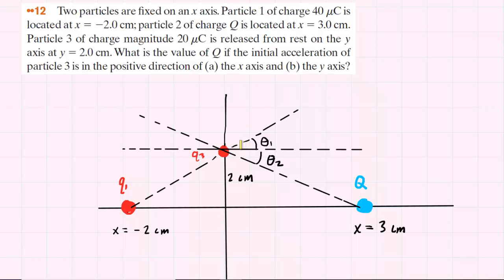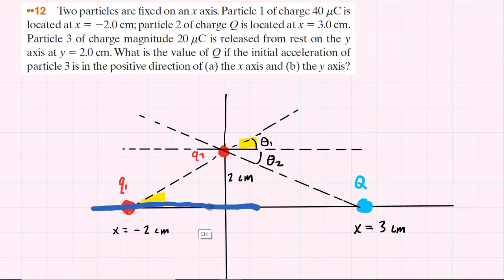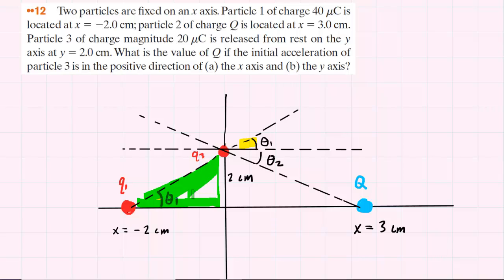Now you may notice that theta 1 is going to be equal to this angle down here. Basically the reason for that is because you have two lines running parallel to one another, and then you have a third line inserted here cutting through them. In that situation, those yellow angles would be corresponding angles, and corresponding angles are equal to one another. So in order to find theta 1, it's going to be helpful to come down here, mark this angle as theta 1, and then use this right triangle to come up with our expression for theta 1.